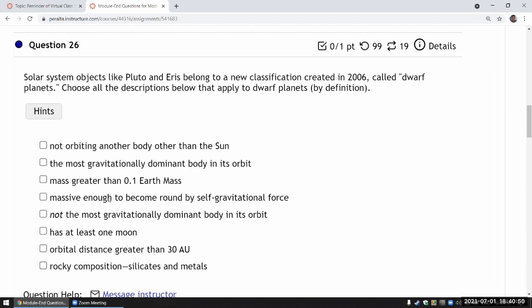If slides weren't somehow clear on their own, watch the lecture video. The idea of clearing the neighborhood is connected with being the gravitationally dominant body in its orbit. And in the last virtual class session, I showed how Jupiter is gravitationally dominant in its orbit. It controls the Trojan asteroids and so on.